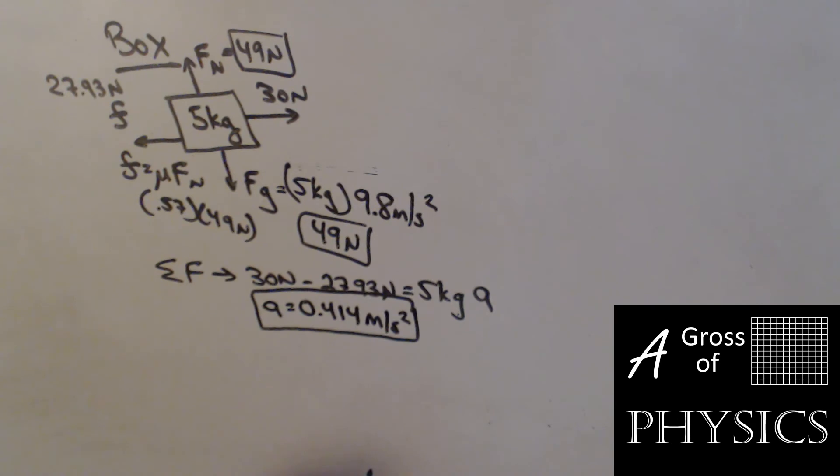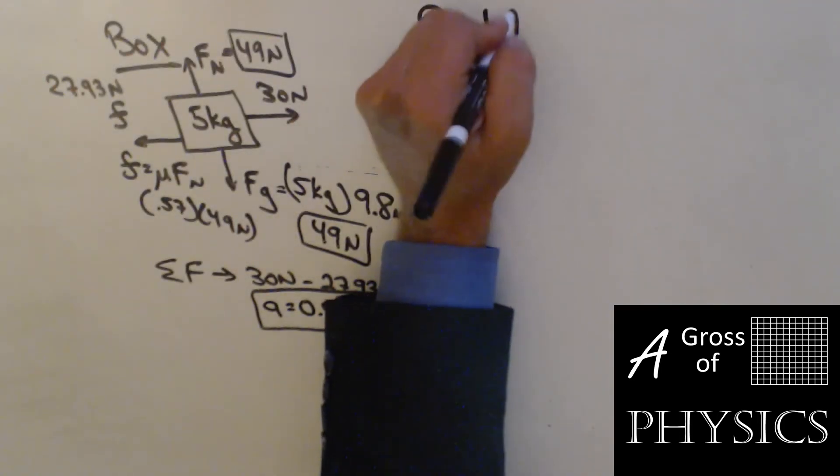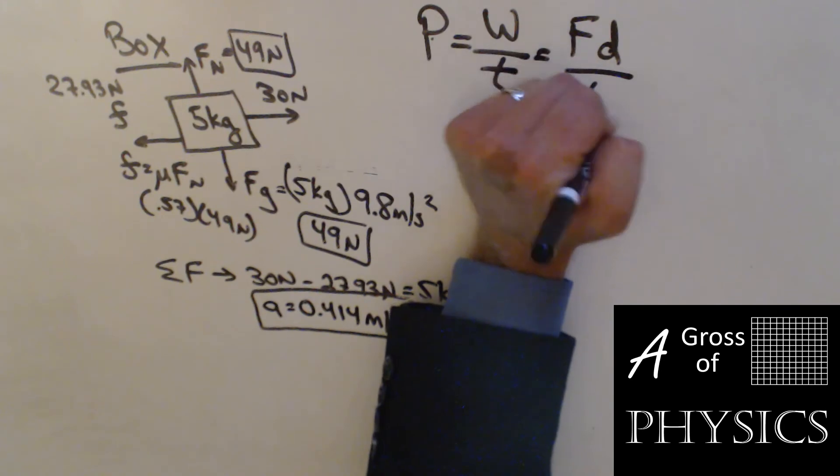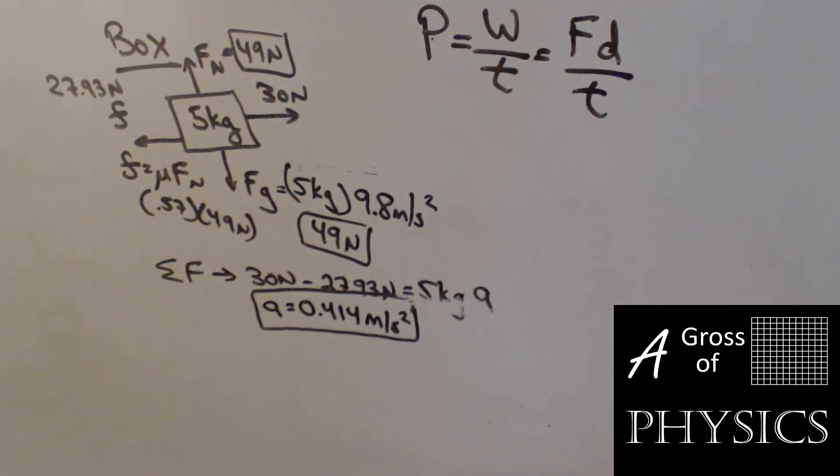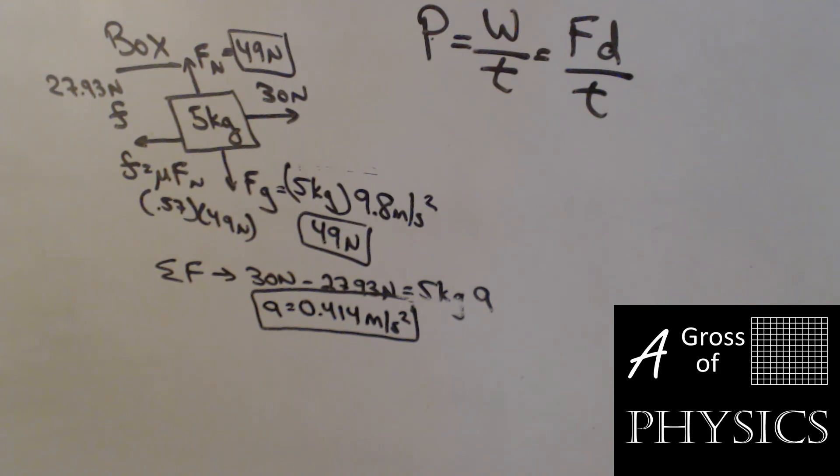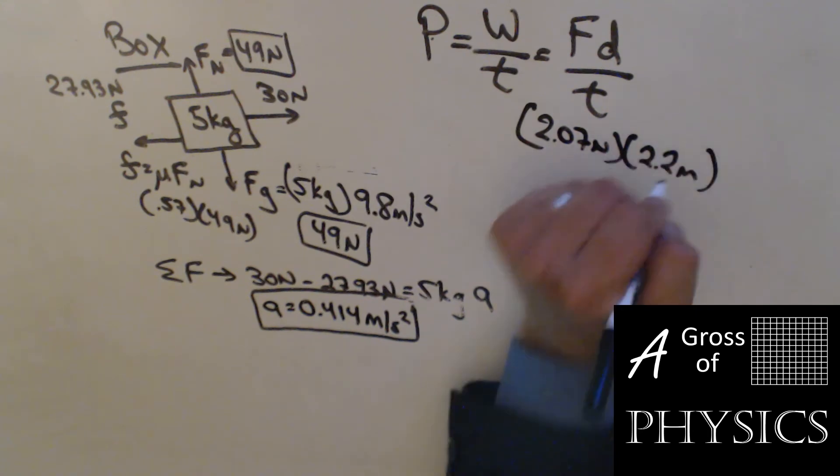If I want to find the power output, what I'm going to need to do is the work over the time. The work is force times distance over the time. What I'm going to look for is the network after 2.2 meters. My net force was 30 minus 27.93, which got me 2.07. The distance is 2.2 meters. The only thing I need to find is the time.